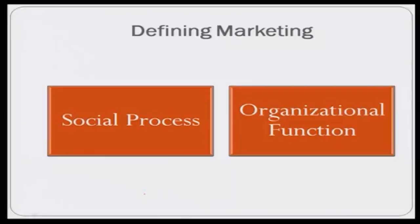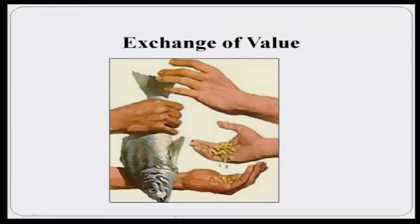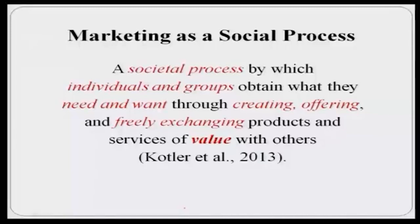There are basically two different perspectives in which we can understand marketing. One is looking at marketing as a social process and the other is understanding marketing as an organizational function. The first perspective — marketing as a social process — is basically marketing as an exchange of value. There is a formal definition by a very famous academician in the marketing area which defines marketing as a social process by which individuals and groups obtain what they need and want through creating, offering, and freely exchanging products and services of value with others.